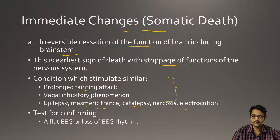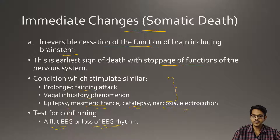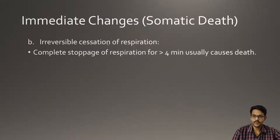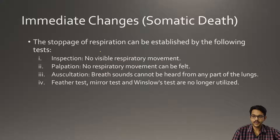These are conditions which should be kept in mind to differentiate between brain death and natural states which are similar to brain death. Tests which can be done to confirm irreversible cessation of brain function include a flat EEG — electroencephalogram — which records the electrical activity of the brain. Loss of EEG rhythm confirms cessation of brain function. Complete stoppage of respiration for more than 4 minutes usually causes death and is more confirmatory.